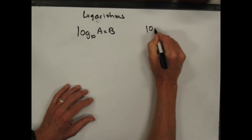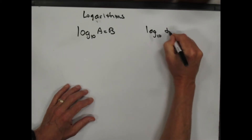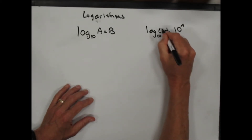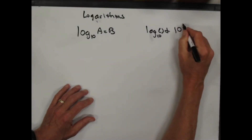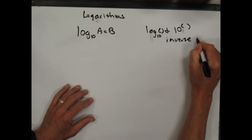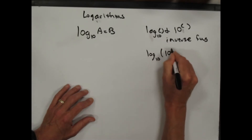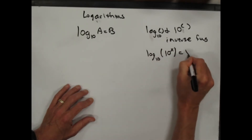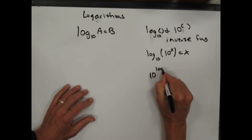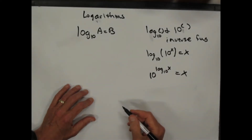So log base 10 and 10 to the power are inverse functions. These are inverse functions. So log base 10 of 10 to the x is equal to x, because log base 10 and 10 to the cancel each other out, or 10 to the log base 10 of x is also equal to x. They're just inverse functions.